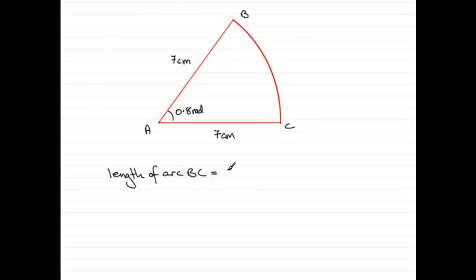And that fraction is going to be 0.8 radians compared with the amount of radians in one complete turn, which is 2π radians. So there's the fraction.